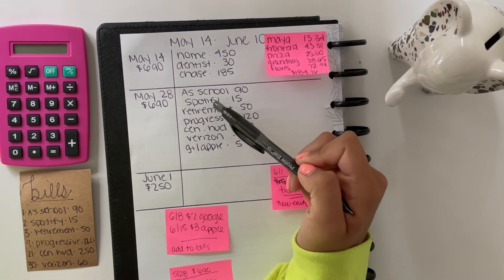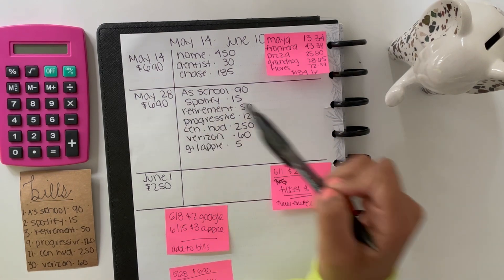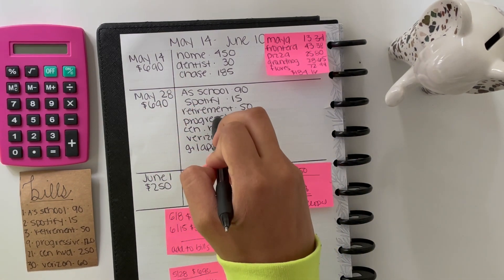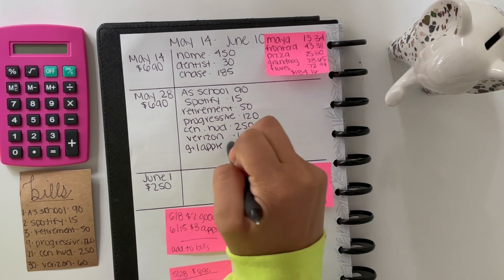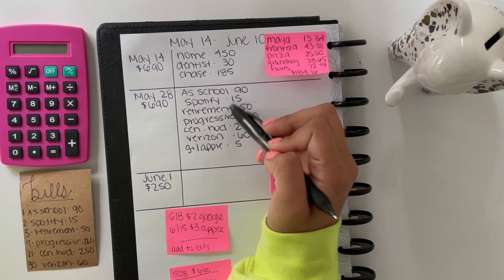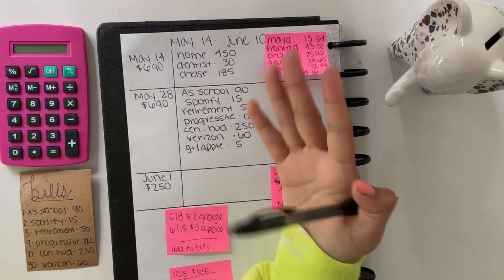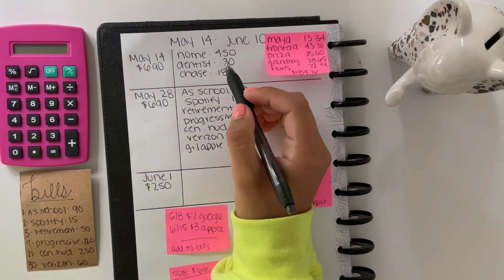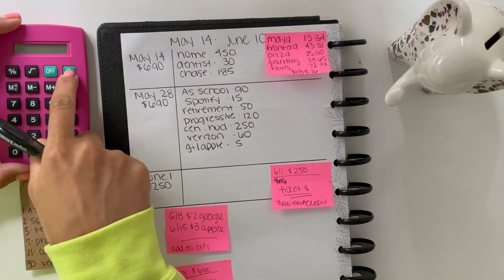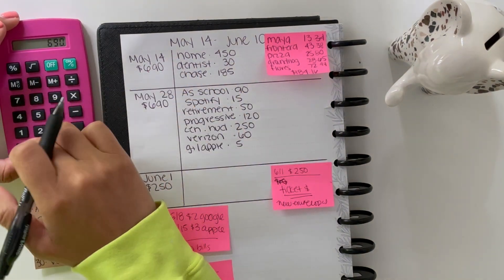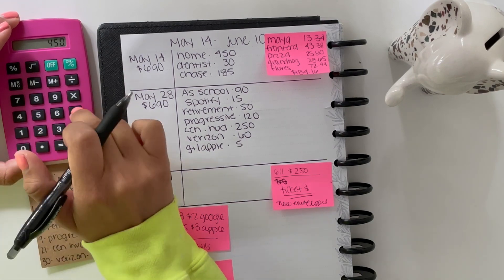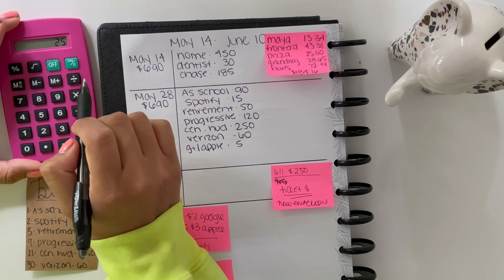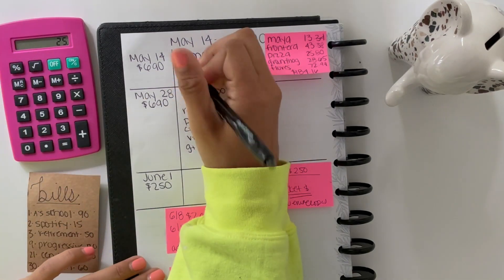I always have the money in my account ready for the transaction when it hits. As soon as my Spotify hits, this is on the second, then I will pull the $15 and pay it. I do a zero-base budget so there's always only enough money for my expenses. Since I round them up, sometimes I have maybe $5 of a buffer but there's never really a huge buffer. So I had $690, $450 for home, $30 for the dentist, and then $185 leaves me with $25, so I'm just going to write here buffer $25.